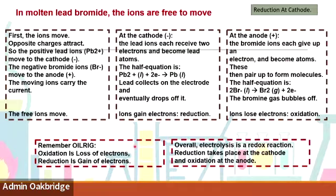Cathode: is it reduction or oxidation? Cathode is a reduction process because reduction is gaining of electrons, and at cathode we are gaining electrons. So reduction happens at cathode. At anode, oxidation takes place because anode is losing electrons - electrons are being transferred away to cathode.